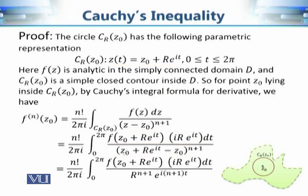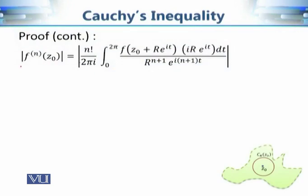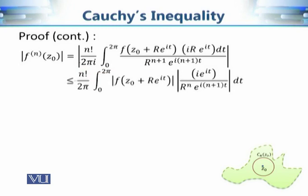Simplifying the denominator, z₀ cancels out, giving us r^(n+1) · e^(iota(n+1)t). Using the important result that the modulus of an integral is less than or equal to the integral of the modulus of the integrand, we can bound the modulus of the nth derivative at z₀. Taking the modulus of each part, we get i·e^(iota·t) divided by r^n, since r^1 and r^(n+1) combine to give r^n.